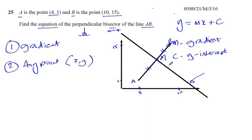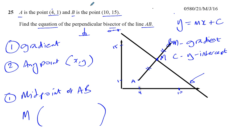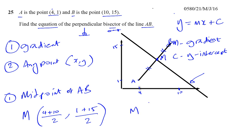This perpendicular bisector passes through the midpoint of AB, so that's one thing we need to find. To find the midpoint, we add the x-coordinates and divide by 2: (4 + 10) / 2 = 14 / 2 = 7. And for the y-coordinates: (1 + 15) / 2 = 16 / 2 = 8. So the midpoint is (7, 8). That gives us a point on the line.